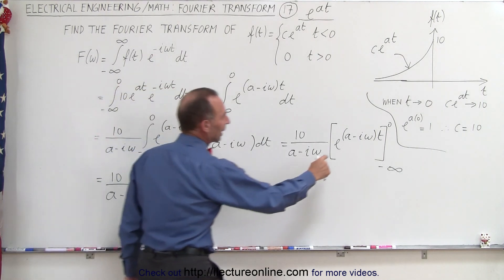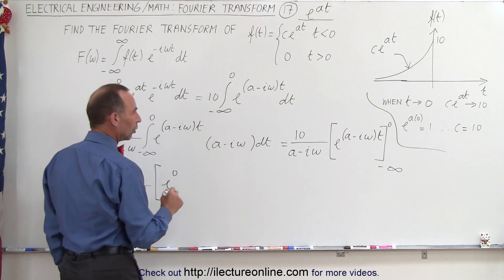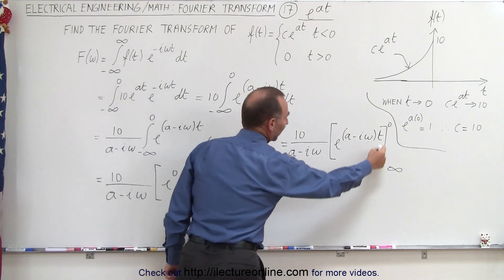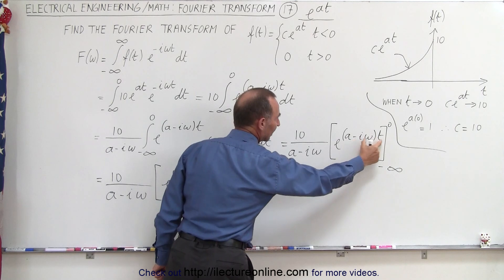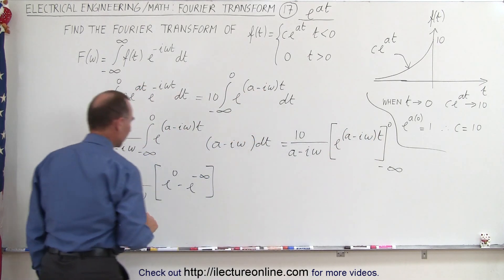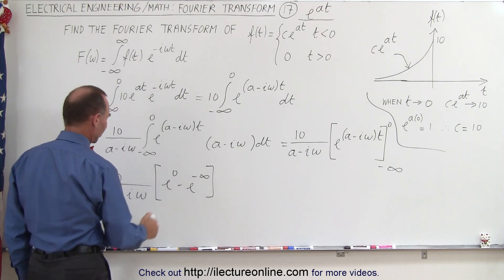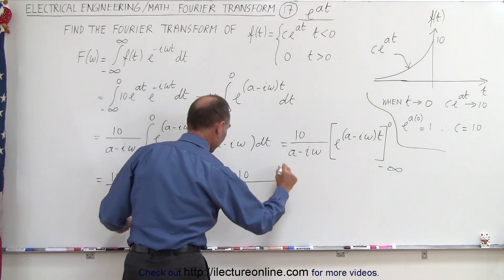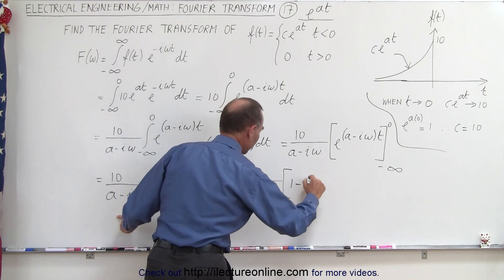Plugging in the upper limit, we get e to the zero. Plugging in the lower limit, we get minus e to the — we plug in negative infinity there. Anything times minus infinity will still be minus infinity. E to the zero equals one, and e to the minus infinity is equal to zero. So this becomes equal to 10 divided by a minus i omega, times one minus zero.